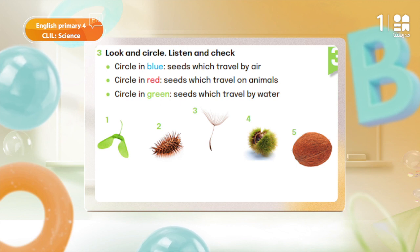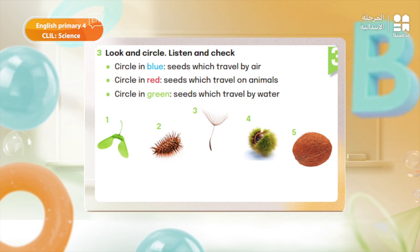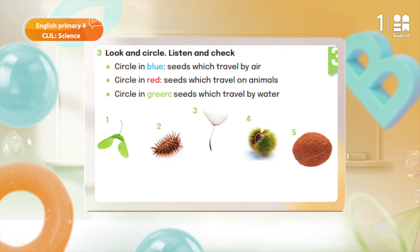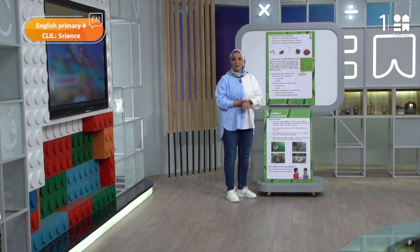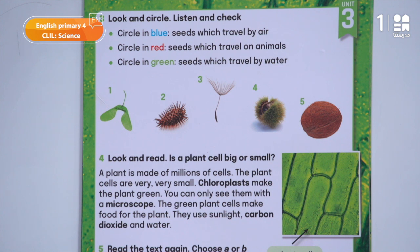From the audio: 1. It travels by air — circle in blue. 2. It travels on animals — circle in red. 3. It travels by air — circle in blue. 4. It travels on animals — circle in red. 5. It travels by water — circle in green. The question says: circle in blue the seeds which travel by air; circle in red the seeds which travel on animals; and circle in green the seeds which travel by water. Prepare your three colors.